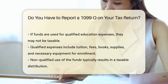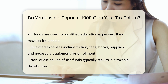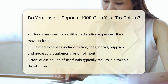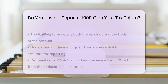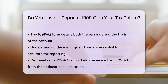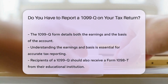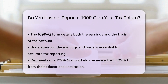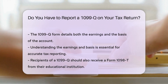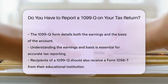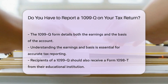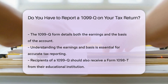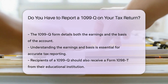If the funds were not used for qualified expenses, the distribution is likely taxable. Additionally, the 1099-Q form includes information about the earnings and the basis of the account. Understanding these components is crucial when reporting on your tax return.